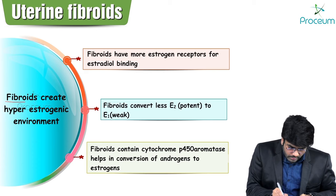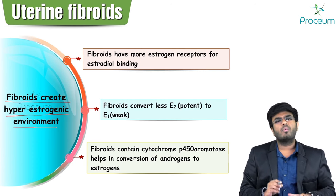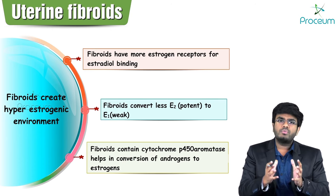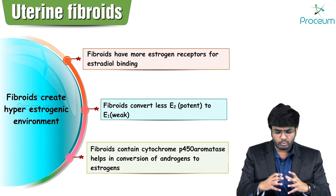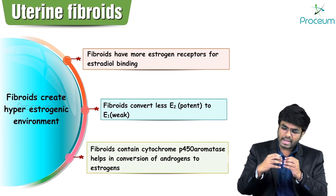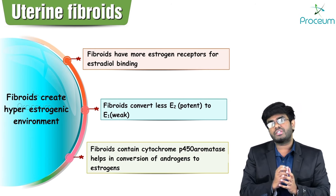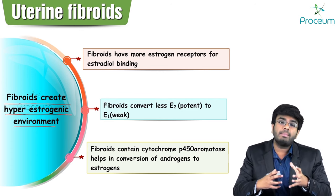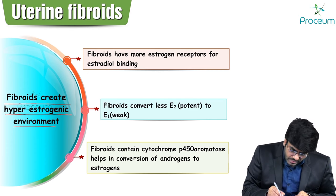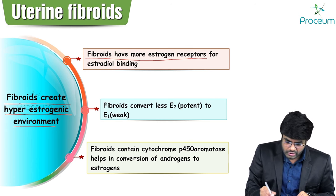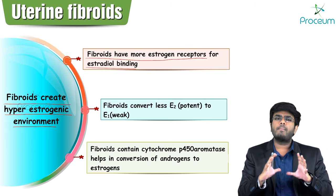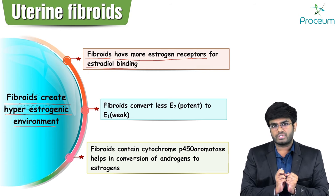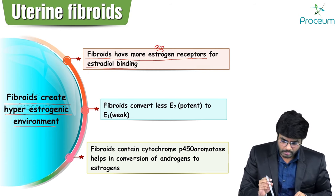Fibroids create and maintain a hyperestrogenic environment because they are smooth muscle cells of the uterus that need estrogen for growth. These fibroids have certain mechanisms to maintain the hyperestrogenic state. Mechanism one: fibroid cells have many more estrogen receptors compared to normal myometrial cells, allowing them to take up large amounts of estrogen — lots of estrogen receptors for estradiol binding.